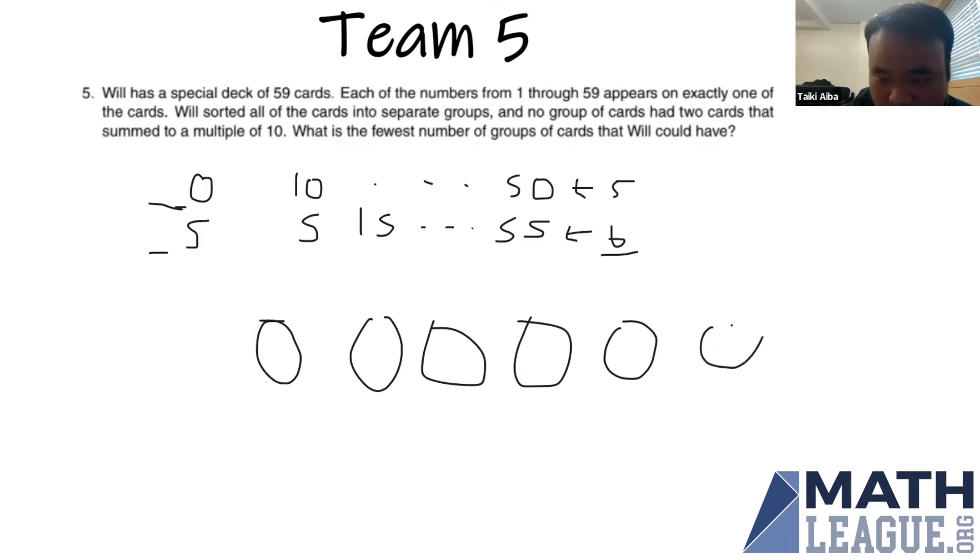So we need at least six groups. From here we can put the numbers with the unit digit of five into each one of the groups, and then same goes for the multiples of 10 which we can put into different groups.